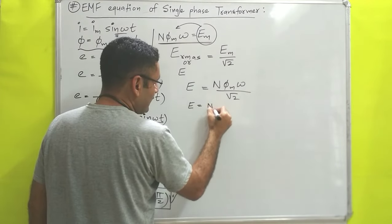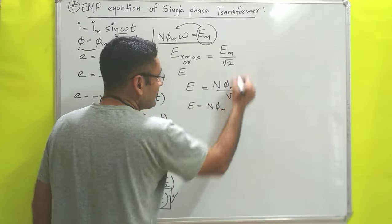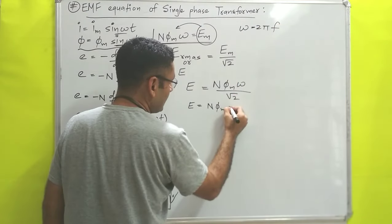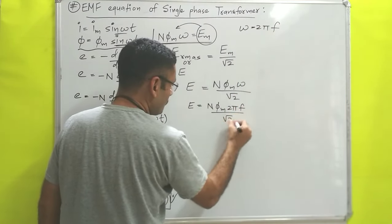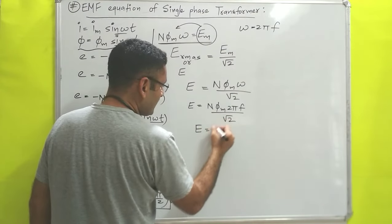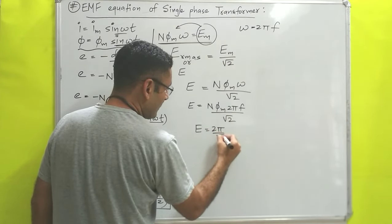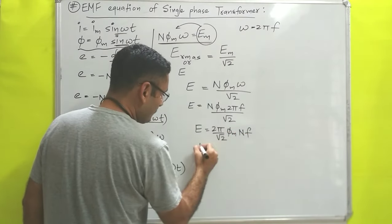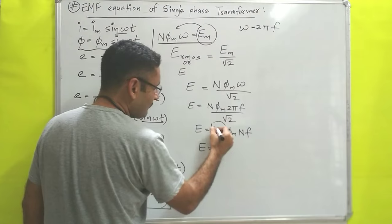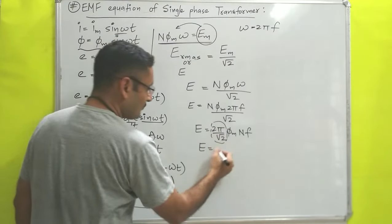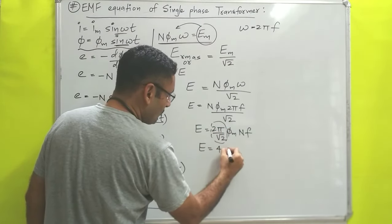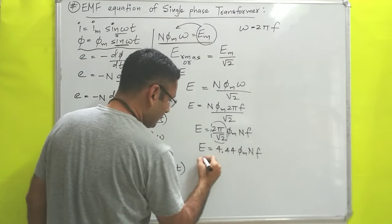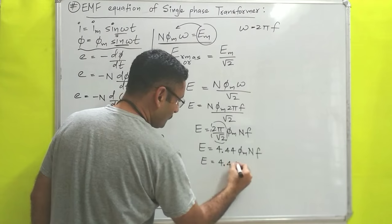Substituting ω = 2πf, we get E = N φm × 2πf divided by √2, which equals (2π/√2) × φm × N × f. Calculating 2π/√2 = 2π/1.414, the value comes out to 4.44. So E = 4.44 φm N f.